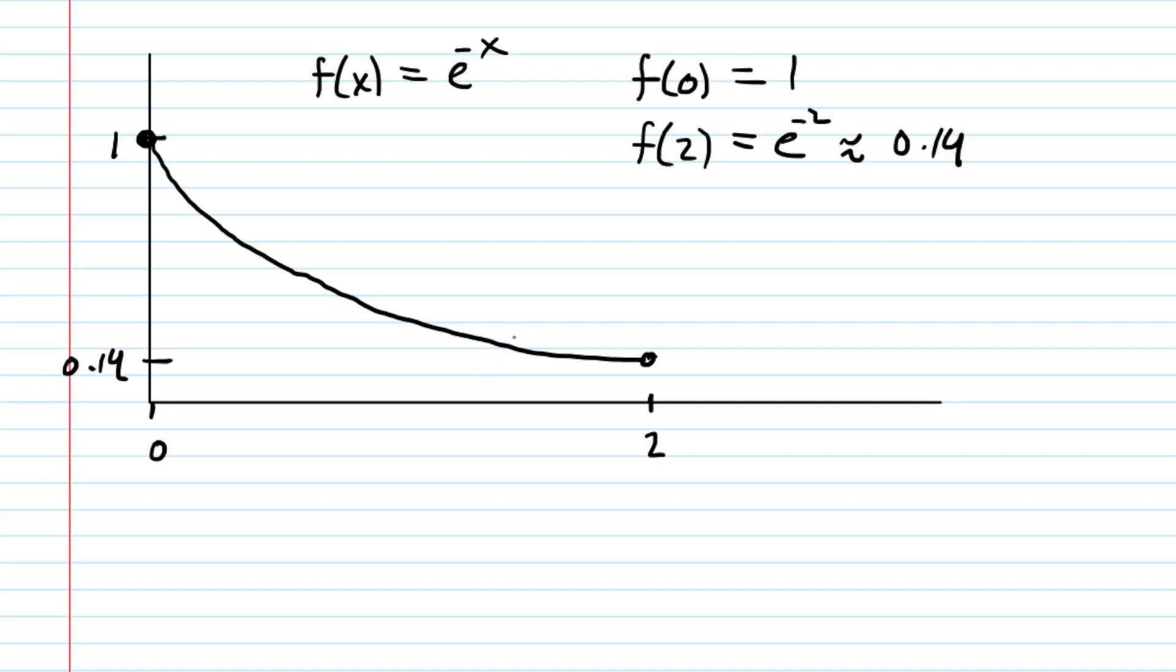So that's a rough sketch, and let us now introduce the secant line. The secant line is very simply a segment that joins the left endpoint to the right endpoint. So this line right here would be our secant line.